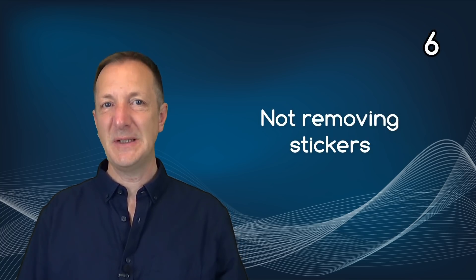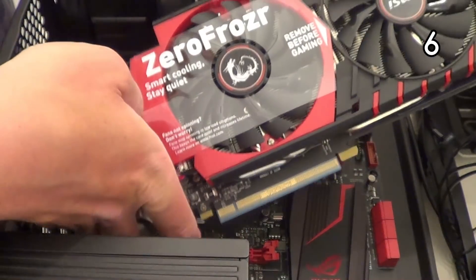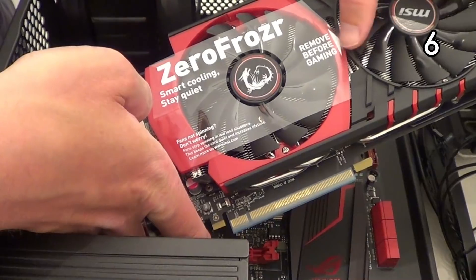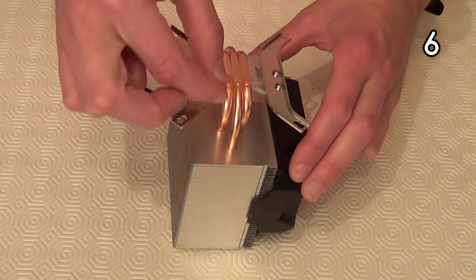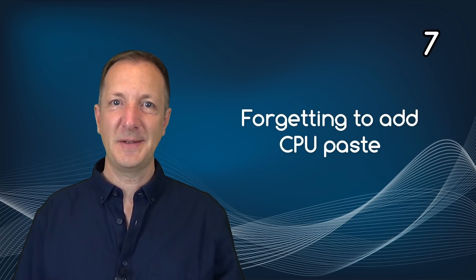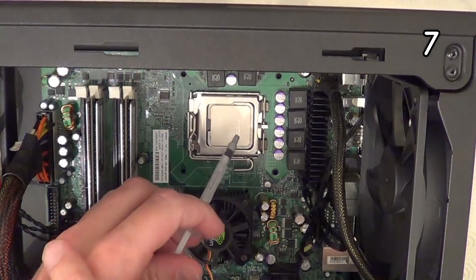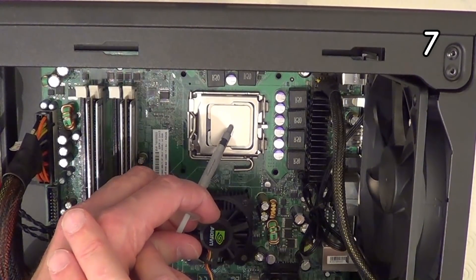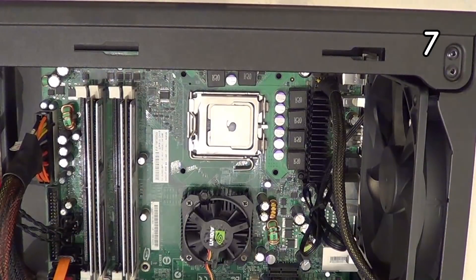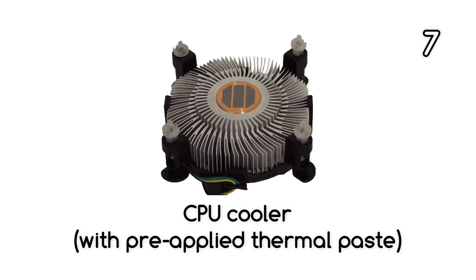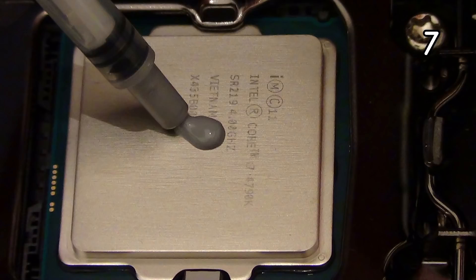Number six: not removing stickers. Some computer components will have plastic stickers on them, and if they haven't been removed before the computer is turned on they could potentially cause a problem. So check your parts for any plastic stickers that are supposed to be removed, then simply peel them off. Number seven: there's no thermal paste between the CPU and the CPU cooler. The CPU will get very hot very quickly and will overheat. To stop this from happening, just add some thermal paste between them. Many CPU coolers already have paste pre-applied, so you may not need to add any — but if not, put some on the CPU to help it stay cooler.